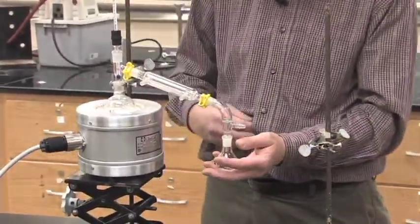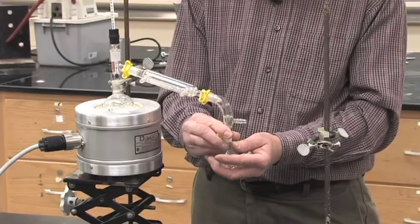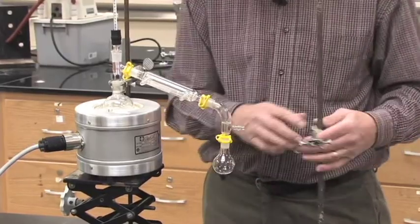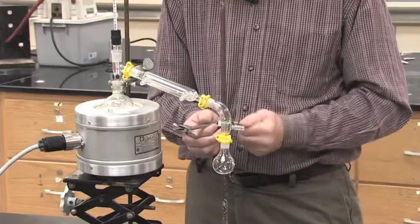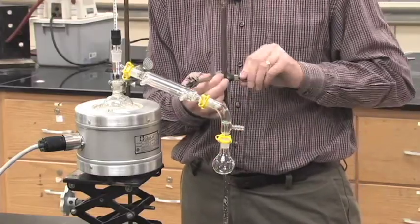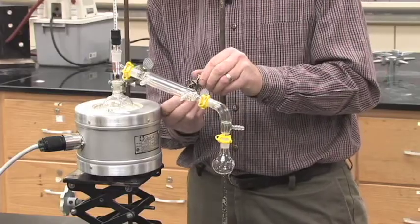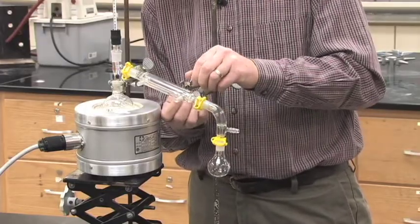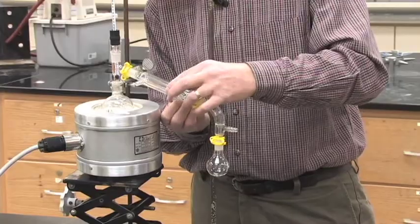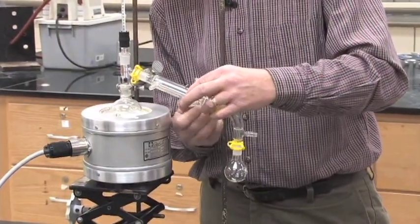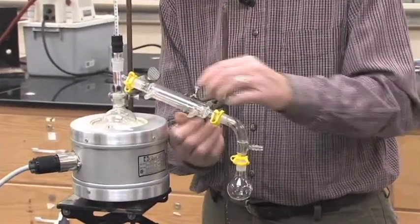And then you'll collect this into another round bottom that looks clean. And then you can put another Keck clamp on that holding it together. And then to make sure we have enough support for it, we can put a clamp on our condenser to hold everything up to make sure everything's good and secure.